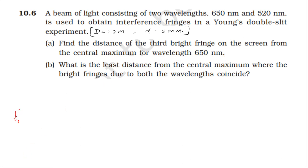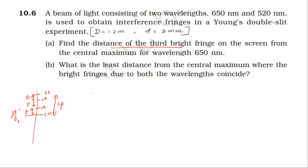Using the formula for fringe position: the distance between slits d and the screen D, from the central bright fringe to the first bright, second bright, third bright — the third bright fringe distance from the central bright is given by the formula: y = 3 × D × λ / d.